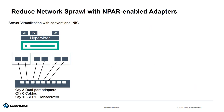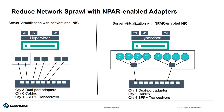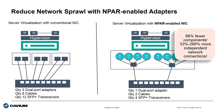So why is N-PAR a benefit? Best practice for server virtualization is to have a minimum of six independent networks for network traffic, management, storage, VM services, etc. With conventional NICs, this requires six dedicated network connections. With N-PAR enabled adapters, a single network adapter with two physical ports can provide either eight or 16 independent networks. This means only two physical connections are required, resulting in 66% fewer components and between 33 and 266% more independent network connections.